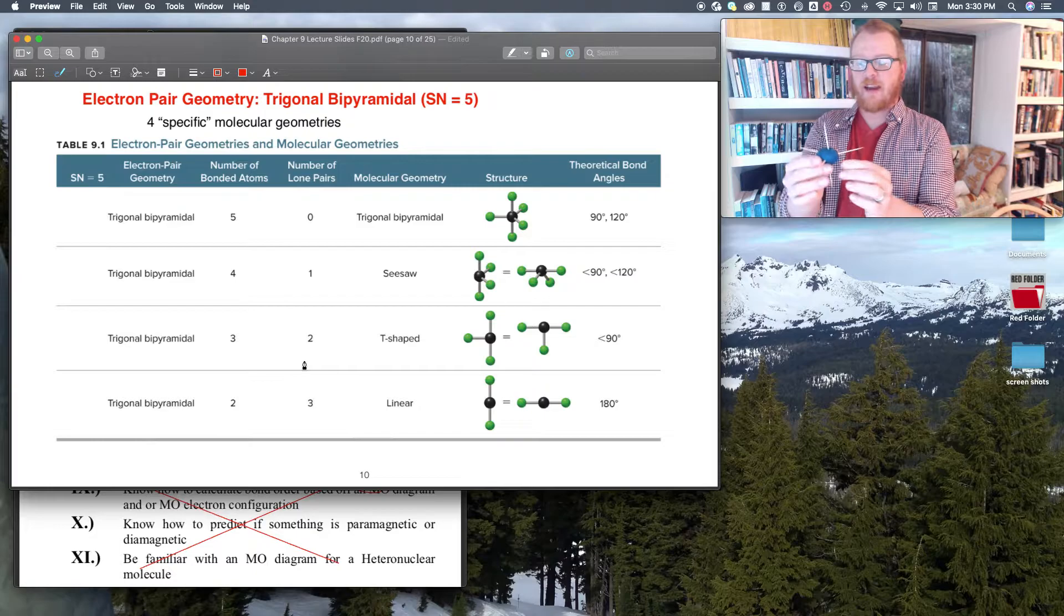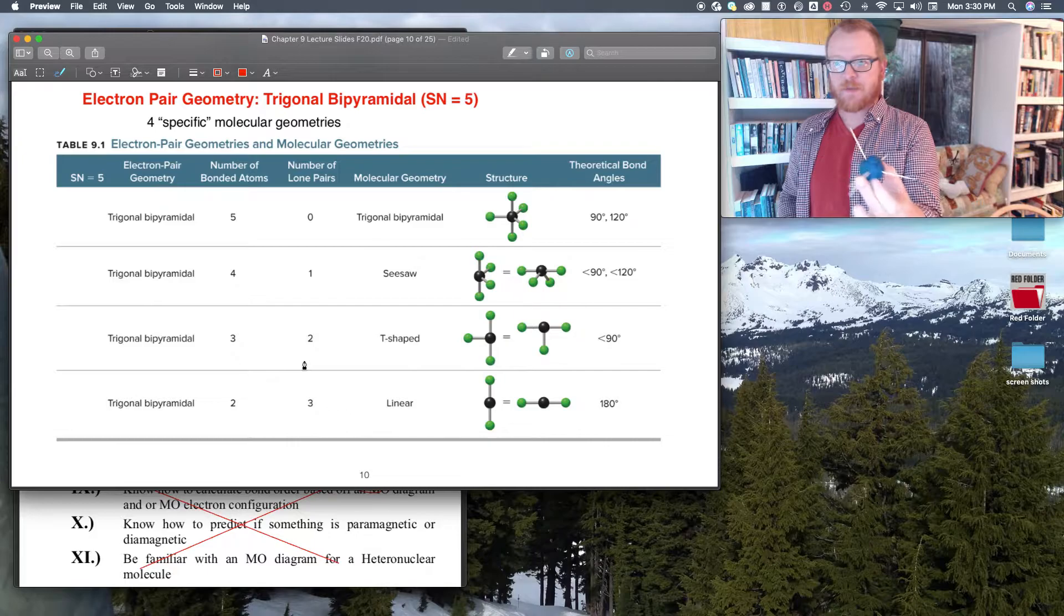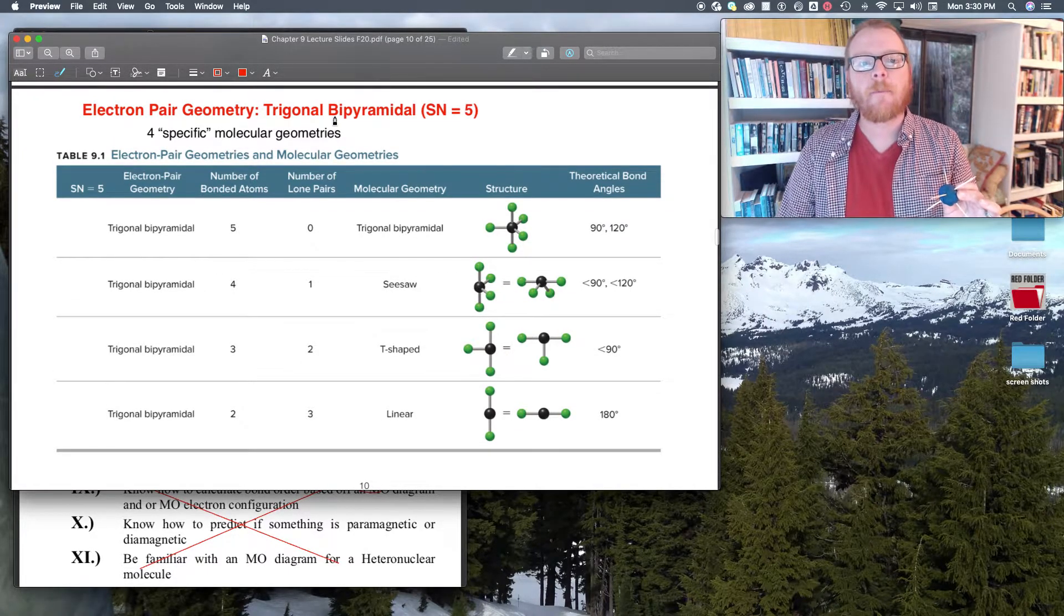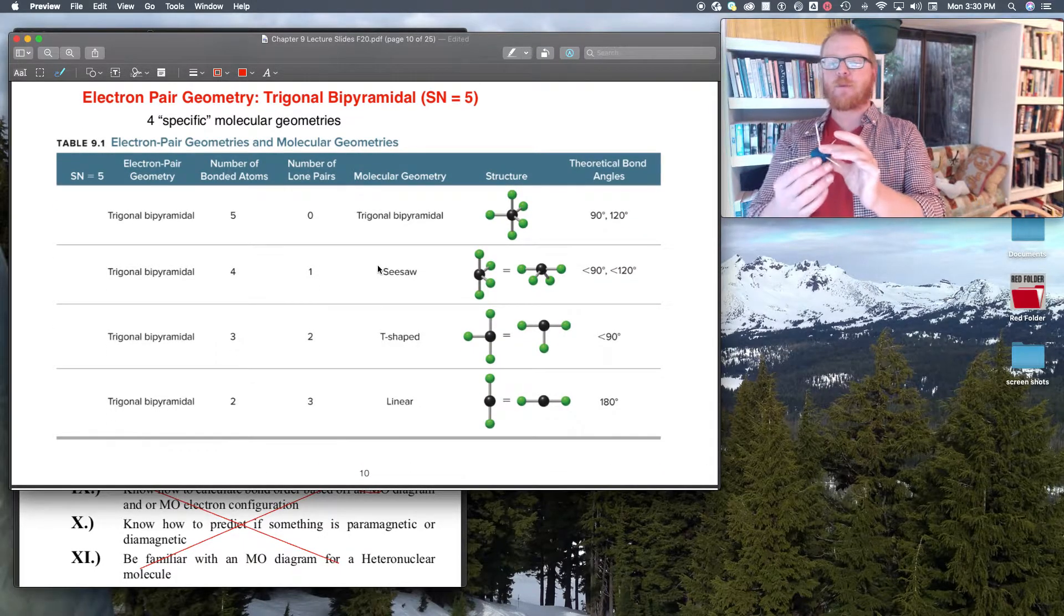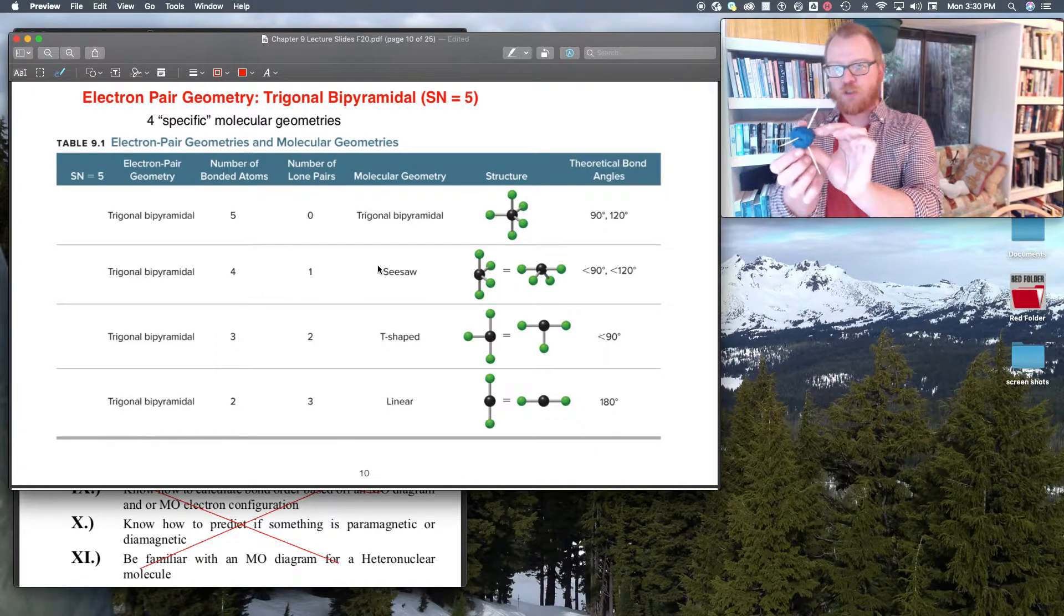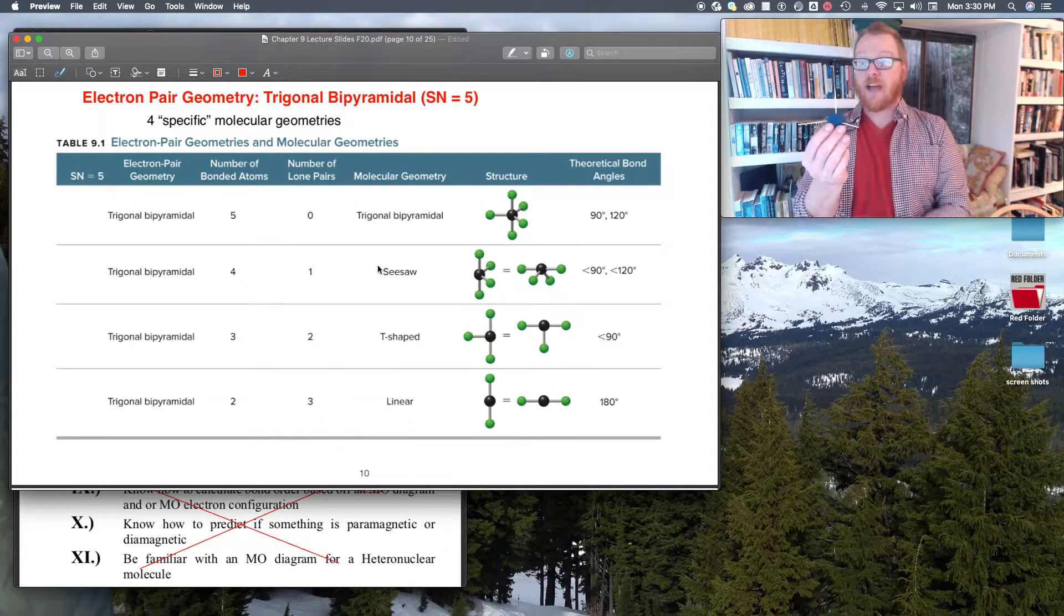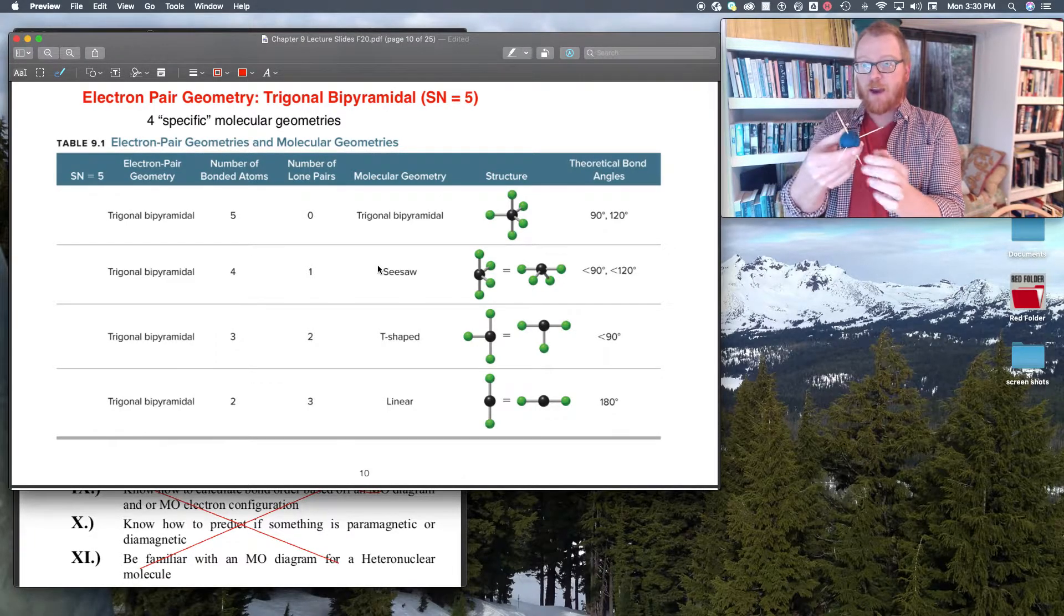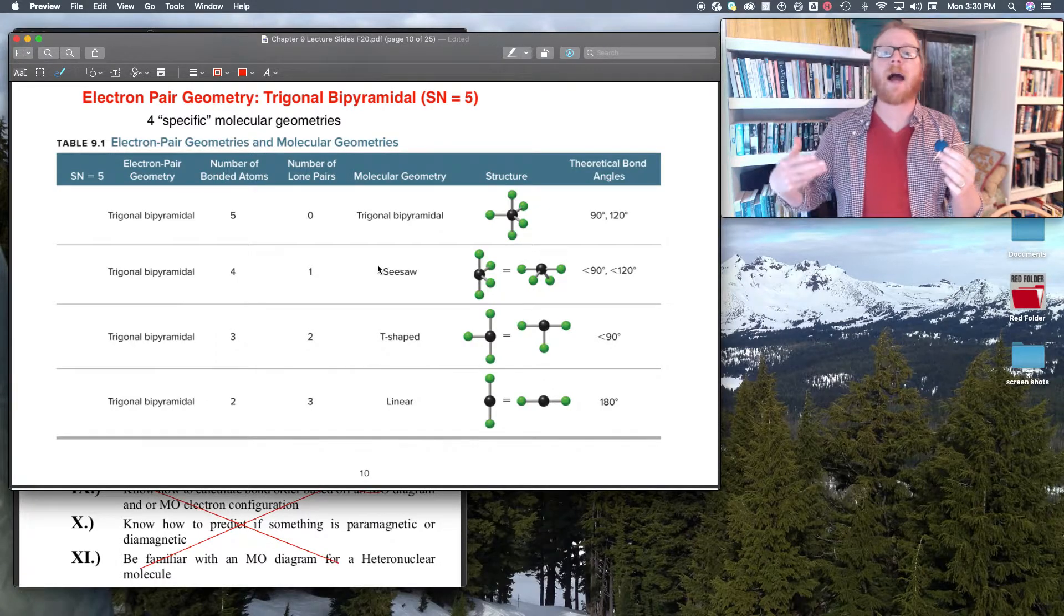And if I rotate that up now, I've got two more that are 180 degrees. So this gives me my trigonal bipyramidal shape. The reason why it's called trigonal bipyramidal is because there's your trigonal shape right there. And bipyramidal, because on the top half of this I can make a pyramid by connecting all these lines, and on the bottom half of this I can make a pyramid. So trigonal bipyramidal.